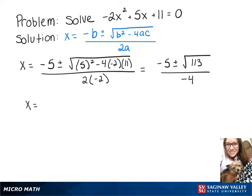So our potential answers here would be x equals negative 5 plus the square root of 113 over negative 4, or x equals negative 5 minus the square root of 113 over negative 4.